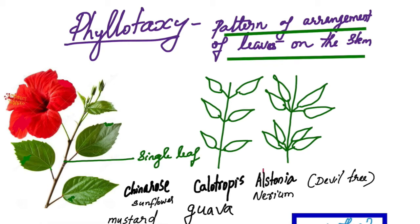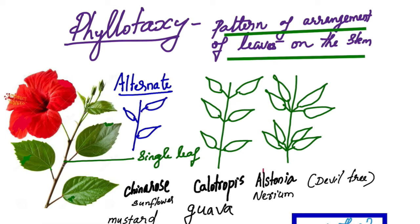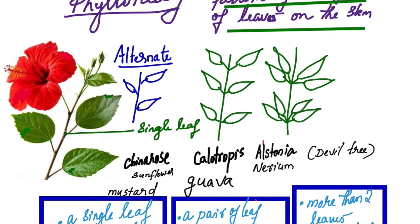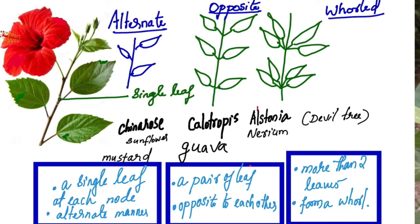There are three types of phyllotaxy. First: alternate — a single leaf from each node, arranged in an alternate manner; examples: China rose, sunflower, and mustard. Second: opposite — two leaves from a node, arranged opposite to each other; examples: Calotropis and Guava. Third: whorled phyllotaxy — more than two leaves from a node, arranged in a whorl; example: Alstonia and Nerium.